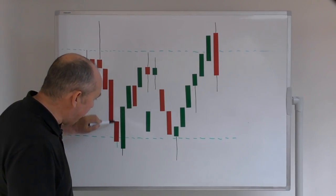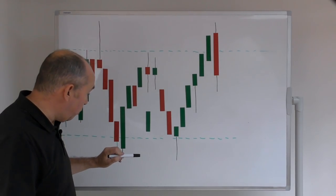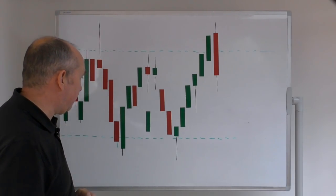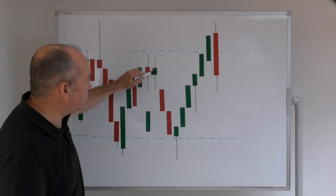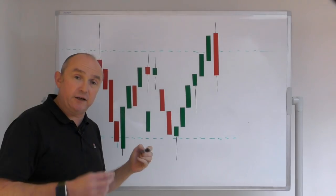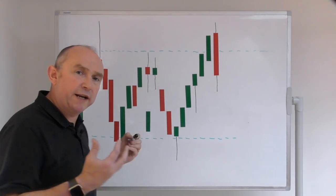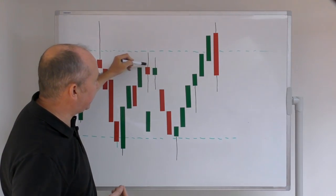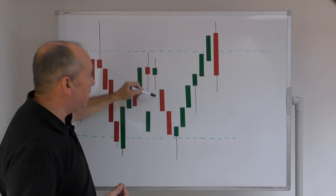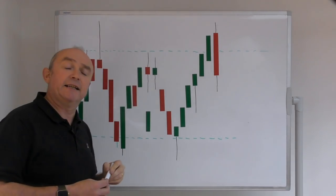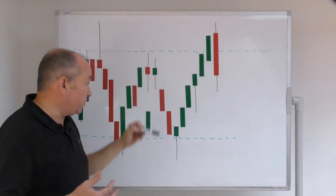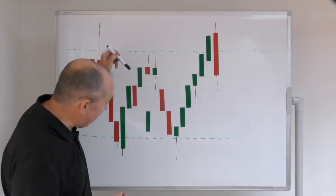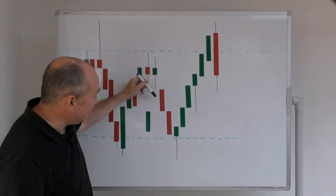This is a bullish engulfing pattern at a level of support, so this market now looks as though it wants to trade up — and indeed that's exactly what happens. Then we come into these doji candles — the areas of indecision. The market doesn't quite know what it wants to do as it comes into the level of resistance. We put in a couple of dojis, then break lower, indicating that the downtrend will continue. After the area of indecision, the next candle is crucial, showing the market now wants to move back down.